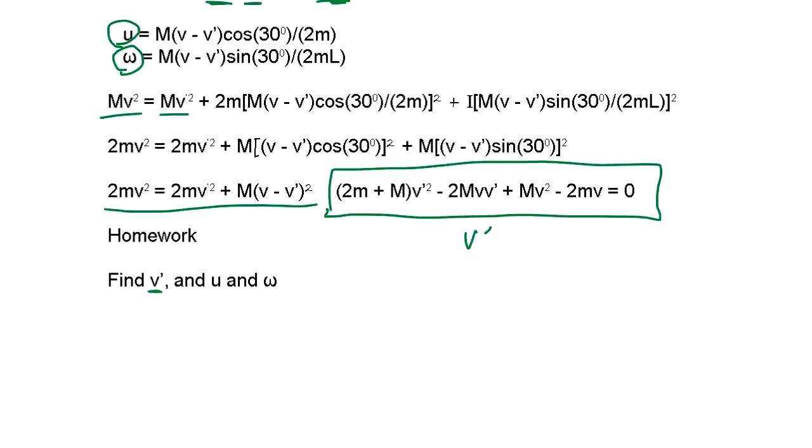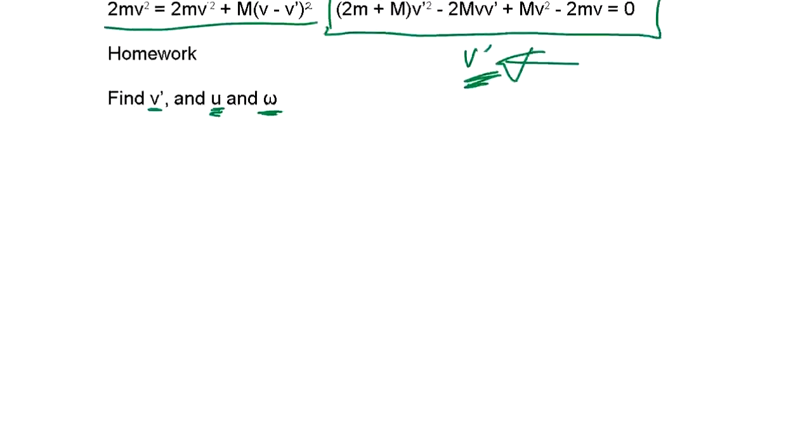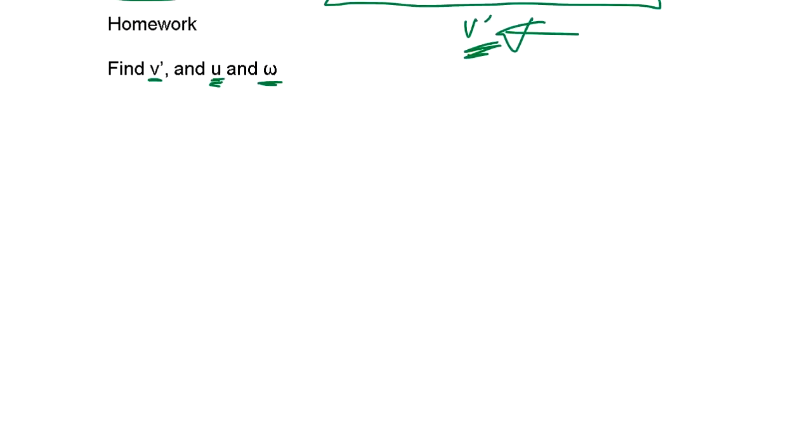So find V prime, U, omega. The V prime is just the solution of this quadratic equation. So you go back, plug in V prime, then you get the U and omega. Okay, so that's the way how we find out the speed and rotation spinning speed.